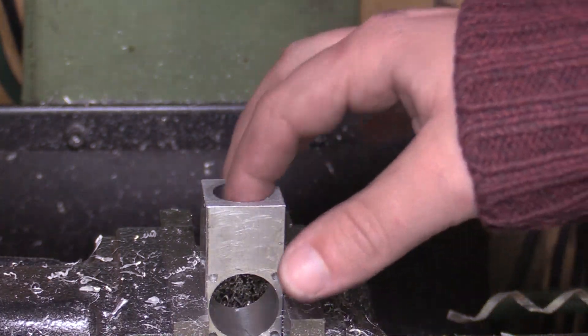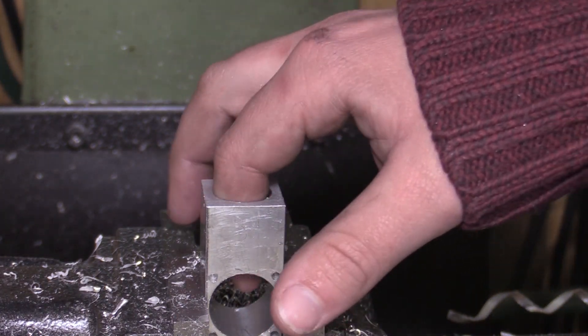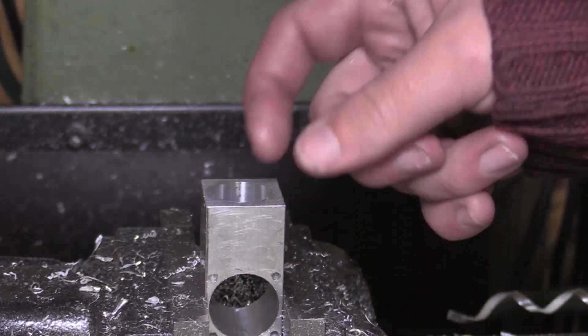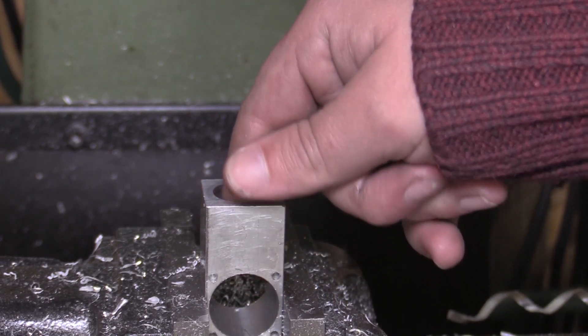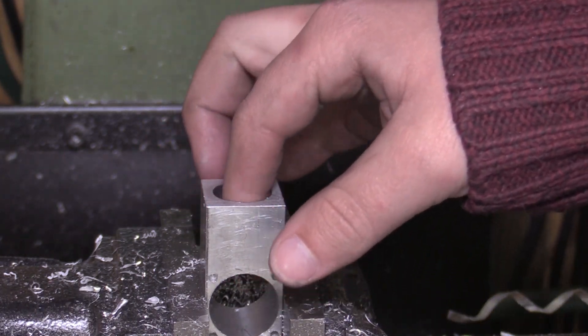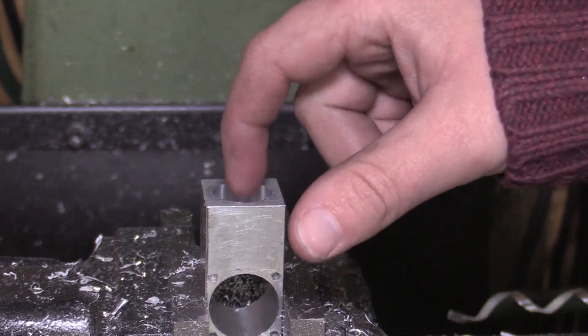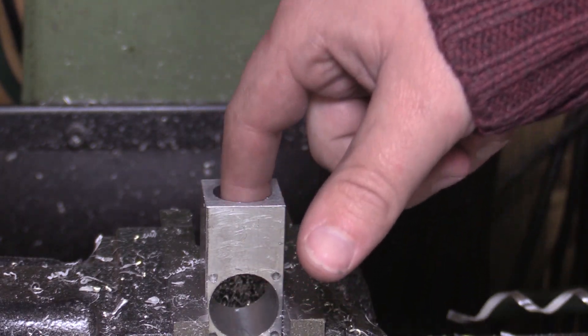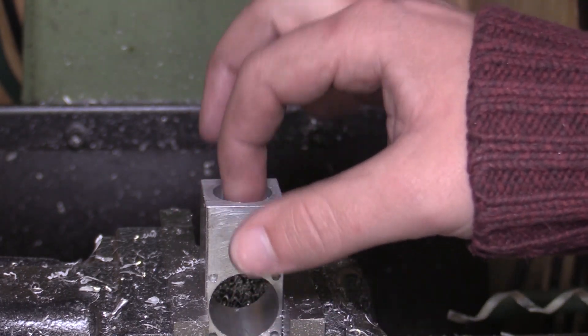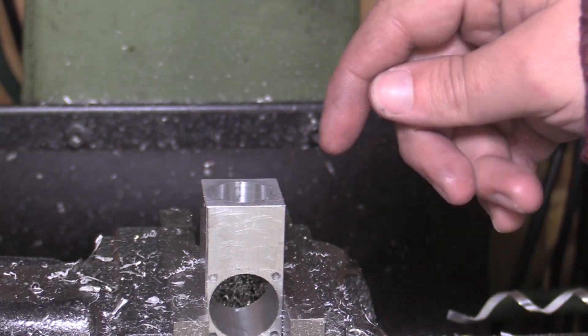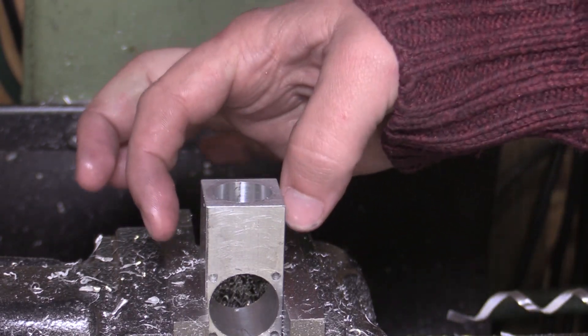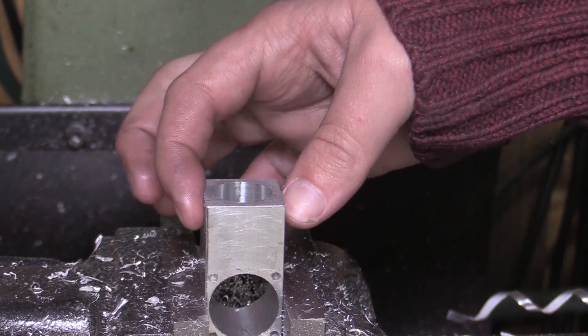Okay guys, so that hole is now bored out to the right dimension. If anything, it's 0.05 of a mil over. I don't think it matters too much because the next part that goes into there, the sleeve, I can adjust that to accommodate the right fit. So all that's left to do on this part is drill four holes in the top and then there's some holes to put in the sides.